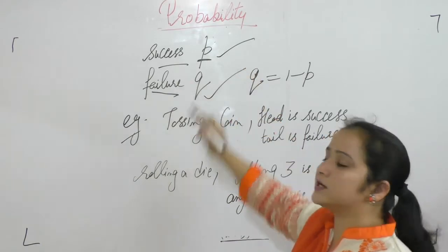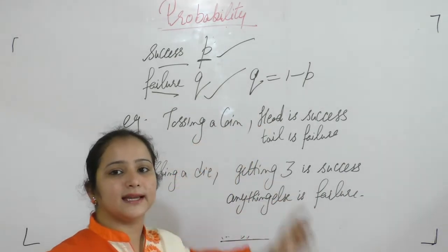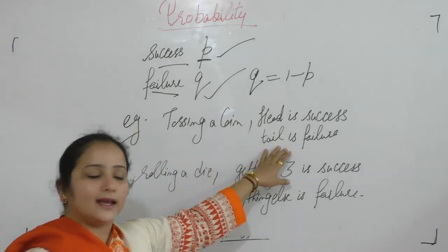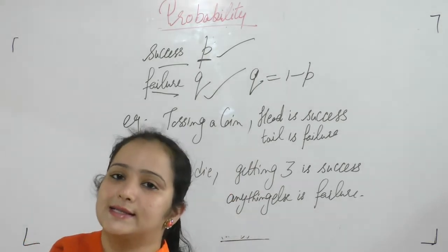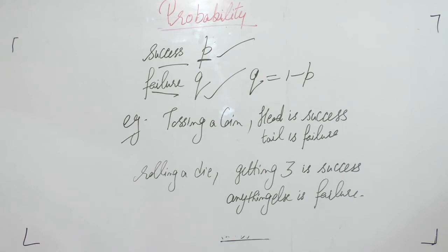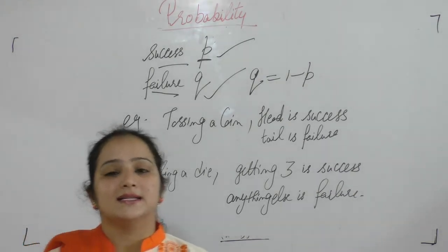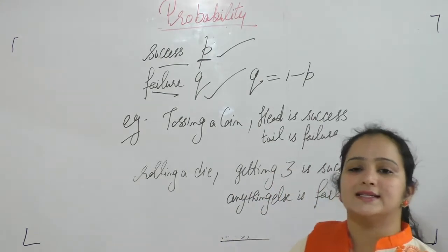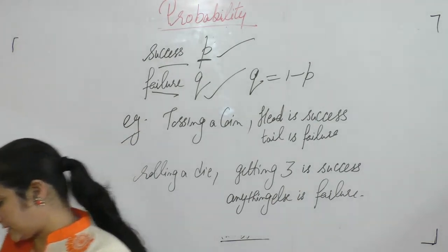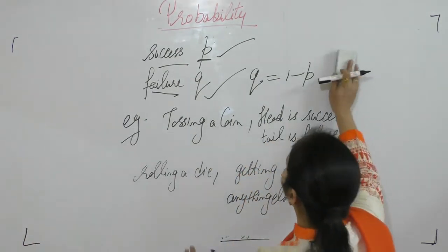Success is denoted by P and failure is denoted by Q. If P is success, then Q equals 1 minus P. For example, when tossing a coin, if you get a head then it is a success, and getting a tail is failure. When rolling a die, if you get a 3 it is a success, and any other number is failure. Such an experiment with two possible outcomes — success and failure — is called a Bernoulli trial.